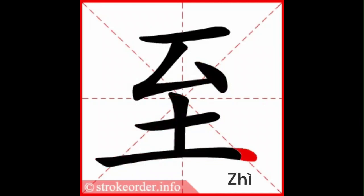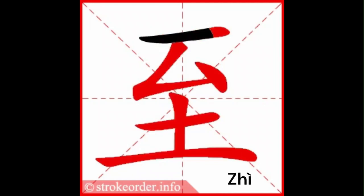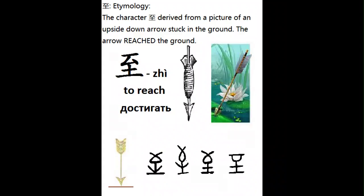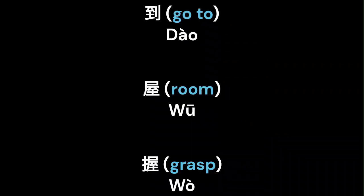至 is a fun character in the Chinese language because it originally looked like an upside-down arrow that has arrived in the ground. This makes it easier to learn. In radical form,